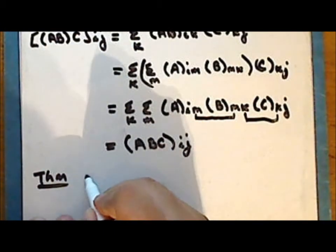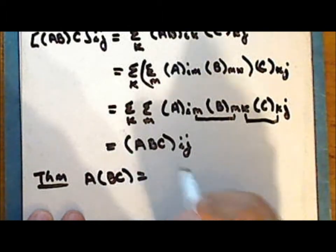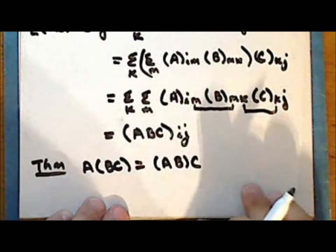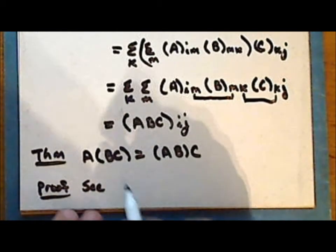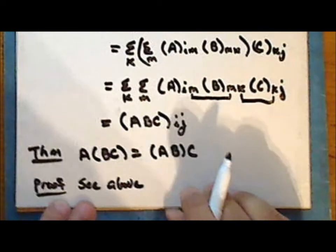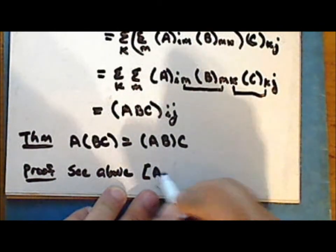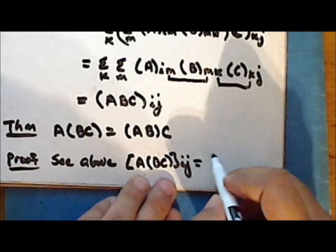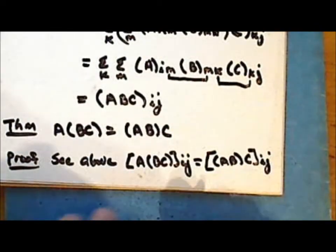So we have effectively proven that matrix multiplication is associative — that is, it does not matter how we group the terms as long as we do not change the order in which they appear. The component in row I, column J of the product (AB)C is the same as the component in row I, column J of the product A(BC).